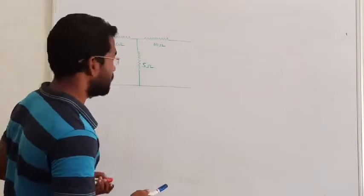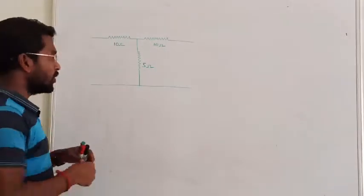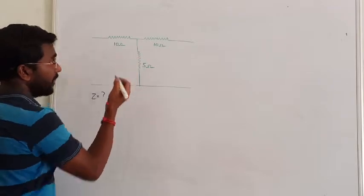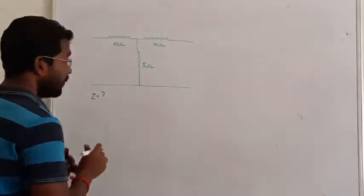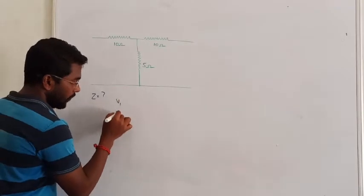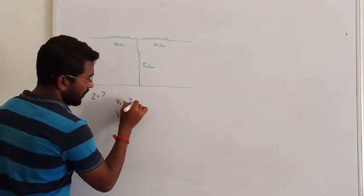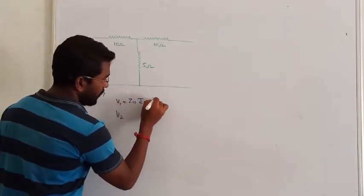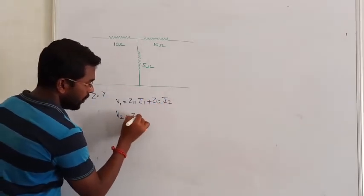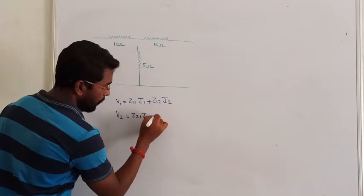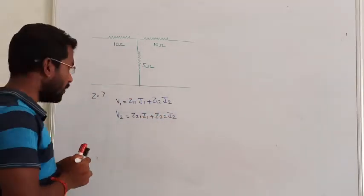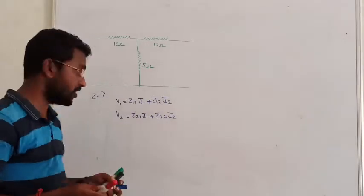Hello guys, let us see the first example. The question is: find out the impedance parameters for the given network. The impedance parameter equations are: V1 = Z11·I1 + Z12·I2, and similarly V2 = Z21·I1 + Z22·I2. That is how we write the impedance parameters.